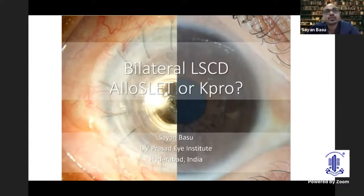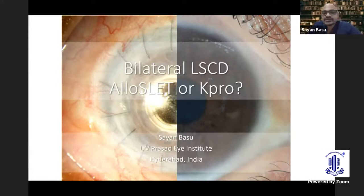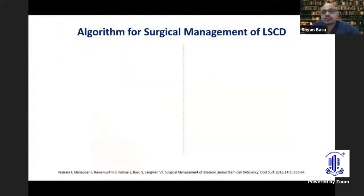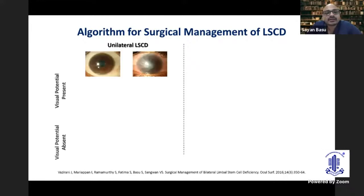I'll address the decision-making process, especially regarding when to specifically go for cell-based therapy. Like Jayesh said, when I'm talking about cell-based therapy I'm specifically talking about SLAT, and when talking about KPro we're mostly talking about a Type 1 KPro because we're talking about bilateral LSCD in a wet eye. Many of you familiar with my talks would have seen this algorithm, also mentioned in our paper that Jayesh put together, published in Ocular Surface.